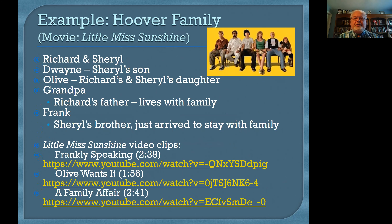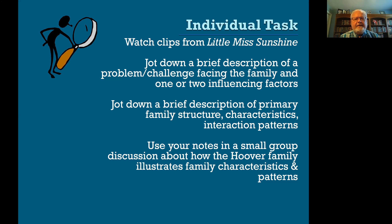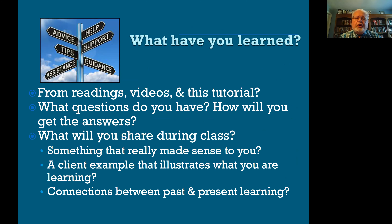Consider how the Hoover family from the movie Little Miss Sunshine illustrates the family characteristics we've been talking about: the couple Richard and Cheryl, Dwayne who is Cheryl's son, Olive who is Richard and Cheryl's daughter, Grandpa, and Cheryl's brother Frank, who just arrived to stay with the family. As you watch these clips — I'll put the links in the comments below — jot down a description of what you see as the problem or influencing factors, the primary family structure, dynamics, and interaction patterns. We'll have a small group discussion in class about this.